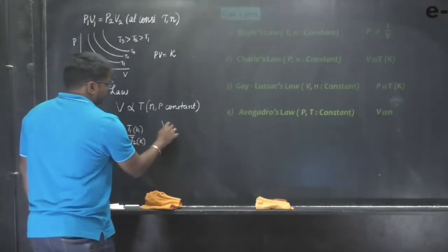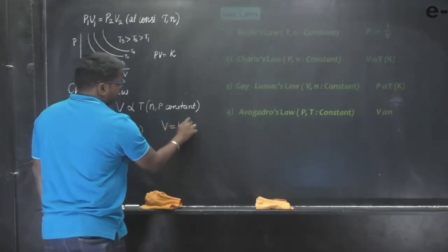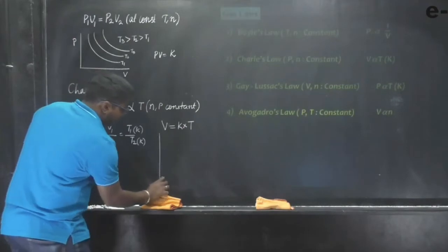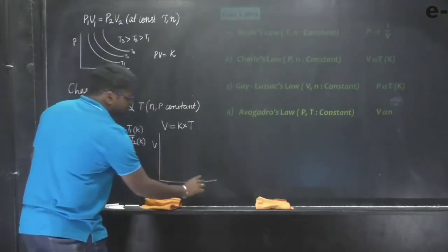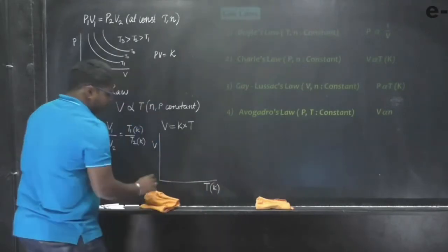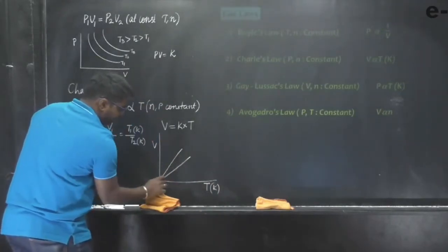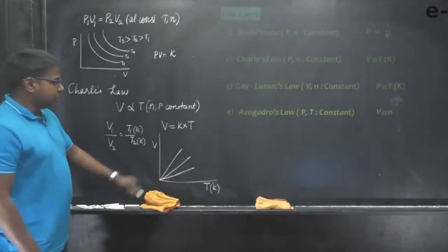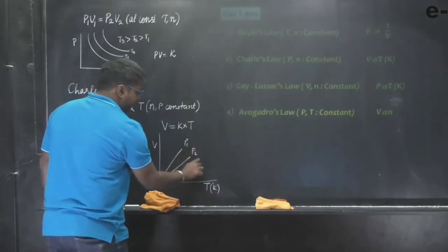This means V = constant × T. If we plot a volume versus temperature graph in Kelvin, it would vary linearly, and at constant pressure we will have various straight lines P1, P2, P3, and so on.